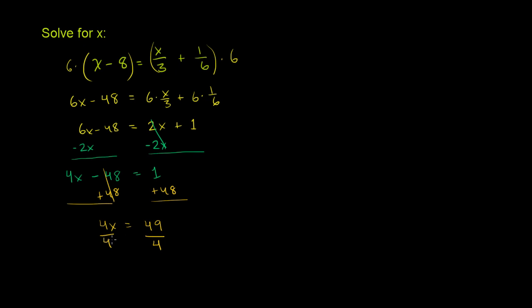Anything you do to one side, you have to do to the other. And so you have, what do we have over here? 4x over 4 is just x. x is equal to 49 over 4. And that's about as far as we can simplify it, because these don't have any common factors, 49 and 4.